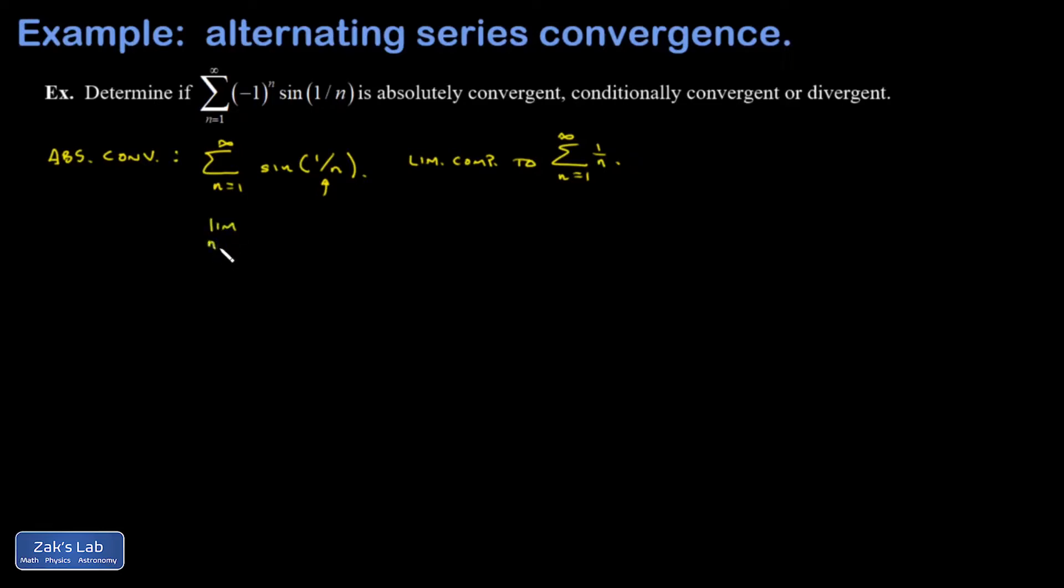When I do my limit comparison, I get sine 1 over n over 1 over n. So that's a 0 over 0 indeterminate form. So I'm going to use L'Hopital's rule. But just a technical point here, I have to switch to saying this is equal to the limit of the real numbers x going to infinity. Sign 1 over x over 1 over x. Because if I want to differentiate something, it better be defined for real numbers and not just the integers.